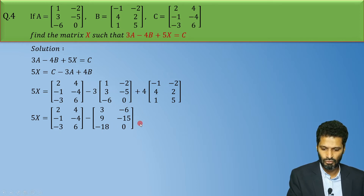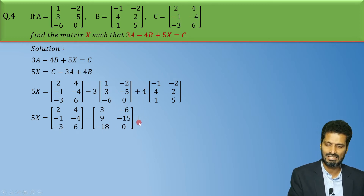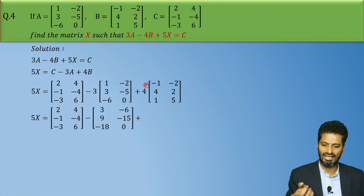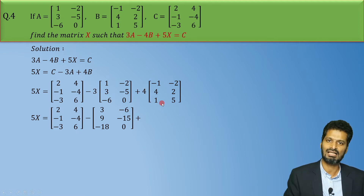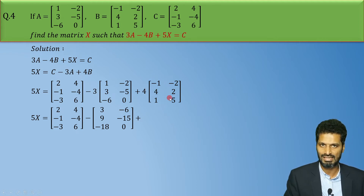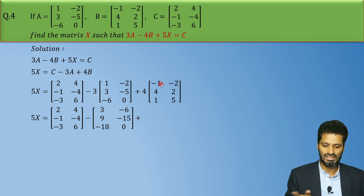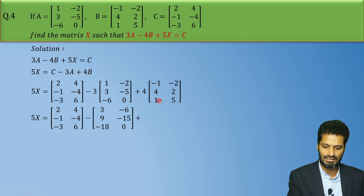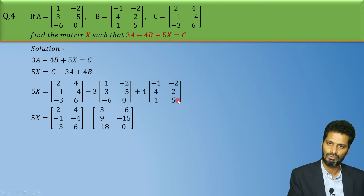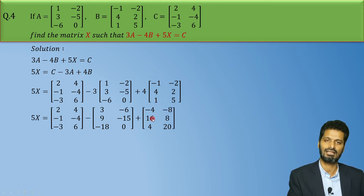Then plus 4 remains. The 4 multiplies all elements inside — this is called scalar multiplication. So multiplying by 4 gives: -4, -8, 16, 8, 4, and 20.